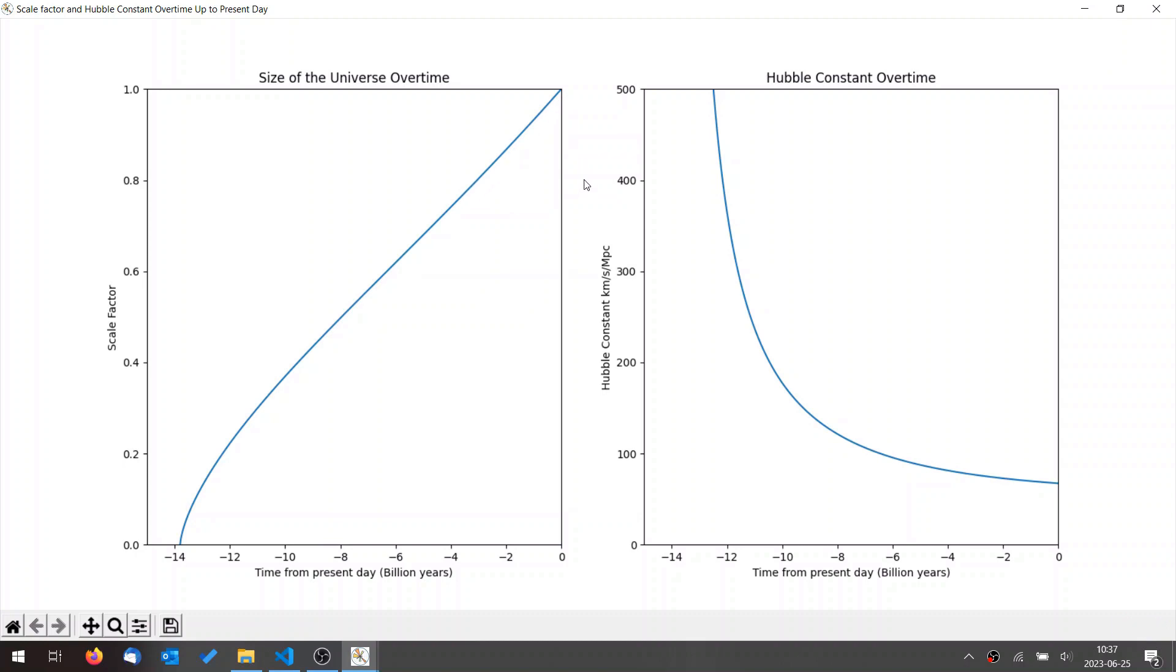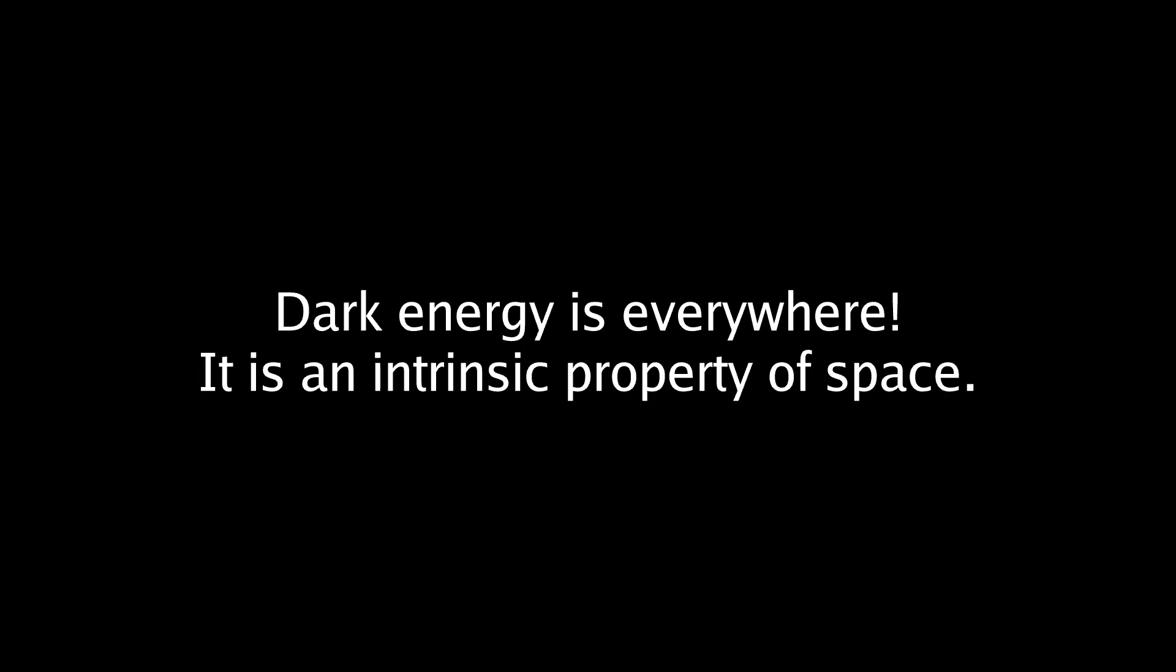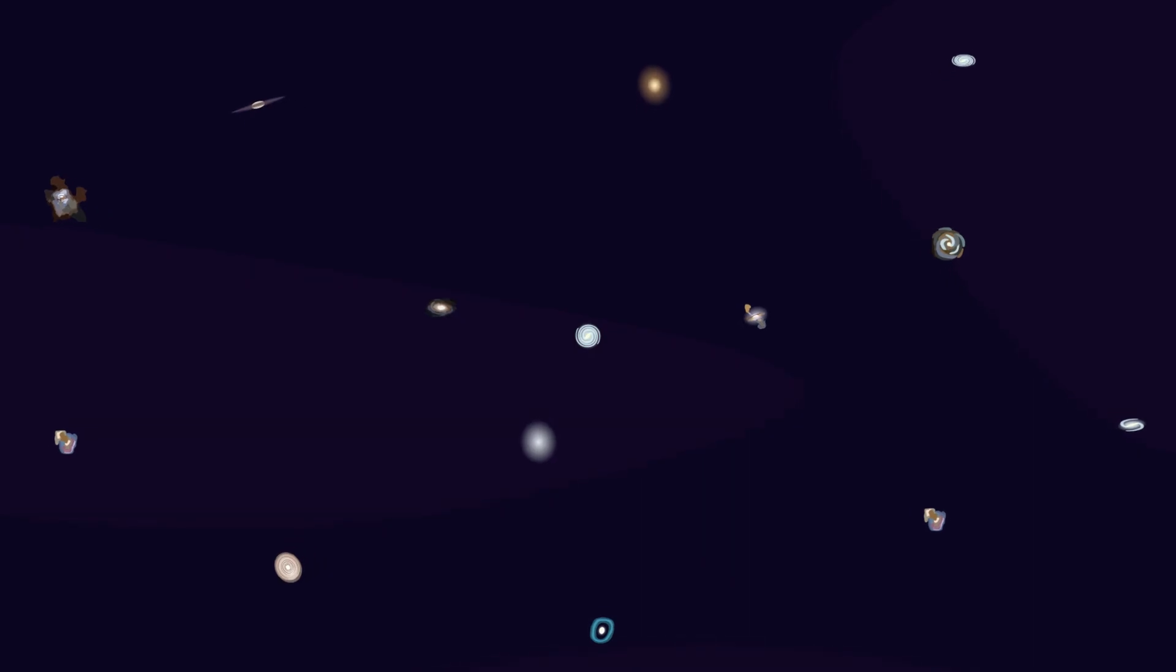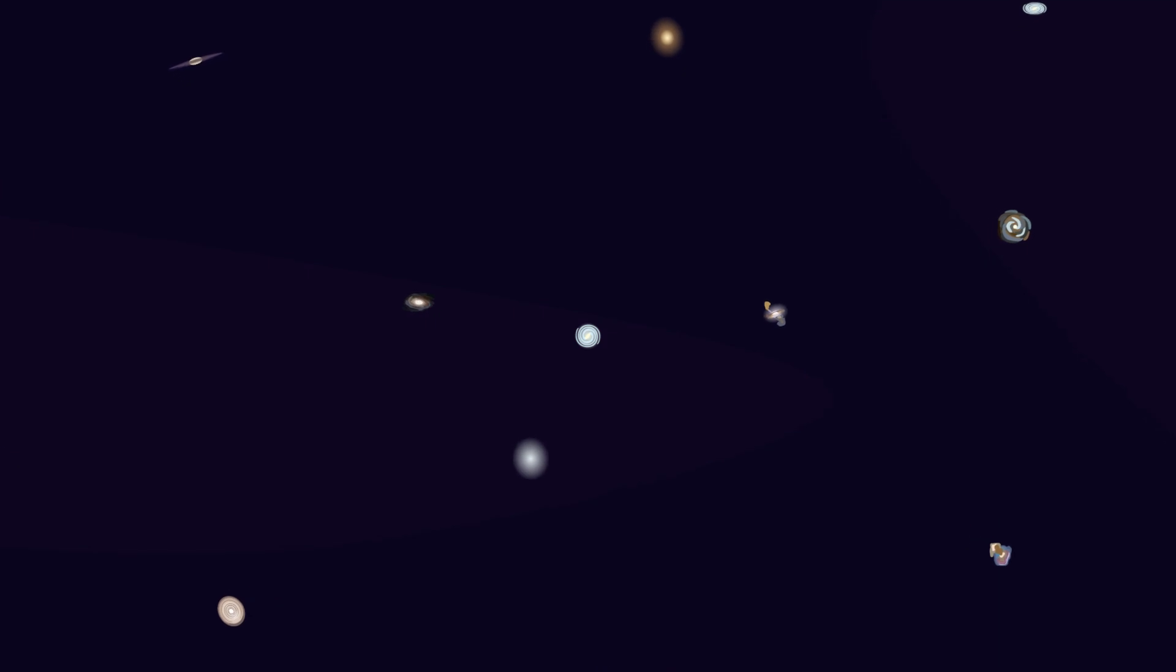The reason for this is because of dark energy. Dark energy is everywhere. It is an intrinsic property of space. Dark energy tries to push everything apart. When more space gets created, more dark energy gets made. The density of matter goes down as the universe expands. When matter becomes more spread out, the gravitational attraction between matter decreases.